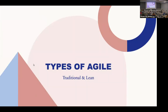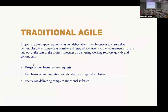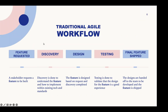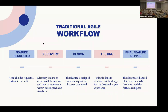There are a few different types of Agile. Before we get into Lean UX, let's briefly talk about what we're calling traditional Agile. With traditional Agile, projects start from a feature request. It places emphasis on communication, and we can quickly respond to change. It also focuses on delivering complete and functional software. A traditional Agile workflow can look like this: a stakeholder makes a request for a feature to be built, a little bit of discovery is done to understand the feature, the feature is designed, testing is done, and then it's passed off to the development team to build and ship.